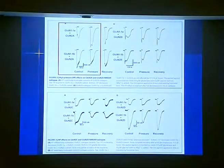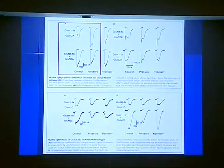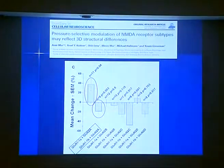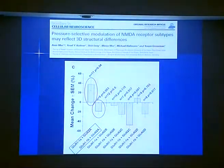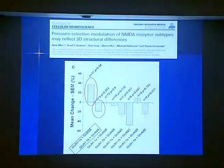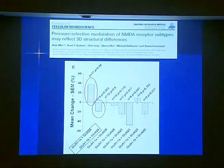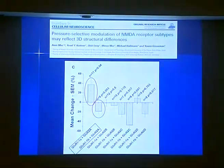We then examined all eight different subtypes of the NMDA receptor. The most interesting pair is the one I described: when we use NR1-1A together with NR2A we see augmentation, but if we replace it with NR1-1B we see significant depression — just one change and completely opposite responses, which was very surprising. Another surprise was that the remaining six subtypes were either depressed or unchanged under high pressure. Just one subtype was augmented.